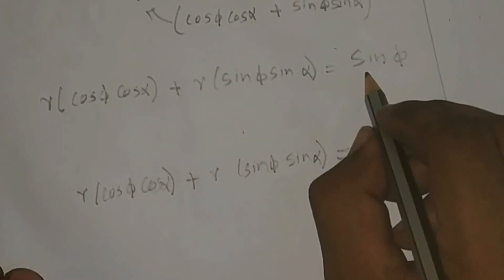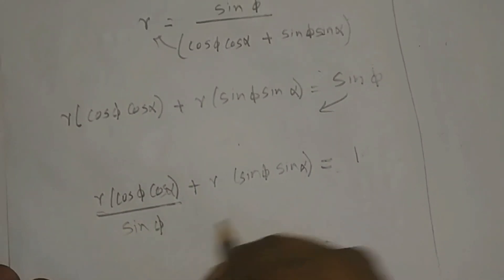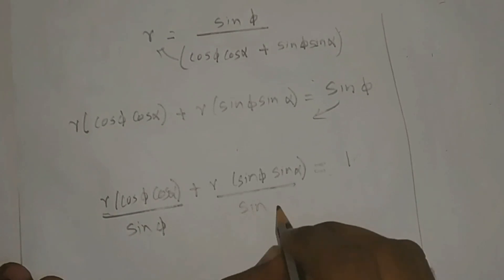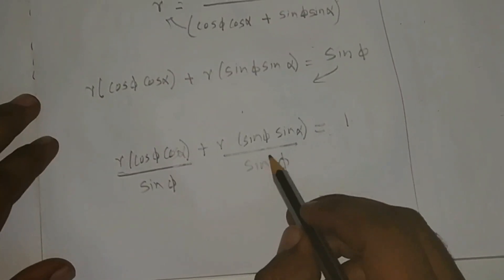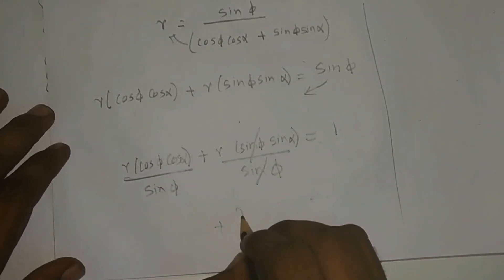Cross multiply the sin φ. Here, sin φ and sin φ cancel, leaving r sin α as the remaining term.